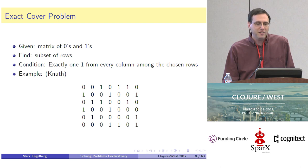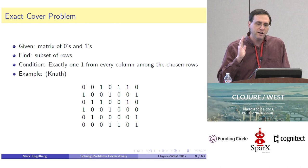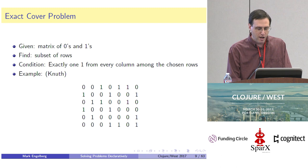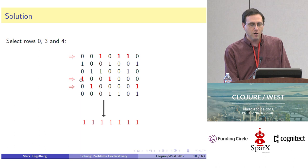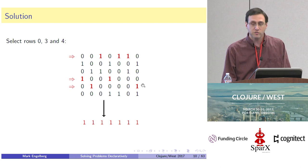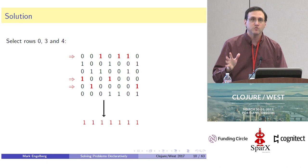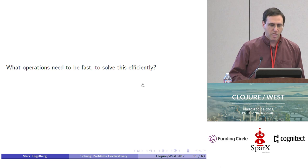The next problem I'd like to talk about is called the Exact Cover Problem. You're given a matrix of zeros and ones, and your challenge is to find a subset of rows where among those rows you have exactly one one in every column. For example, given this matrix of zeros and ones, we can choose these three rows and get exactly one one in each column — that's called a covering of this matrix. This particular matrix only has one covering, but conceivably a matrix could have many possible covers.